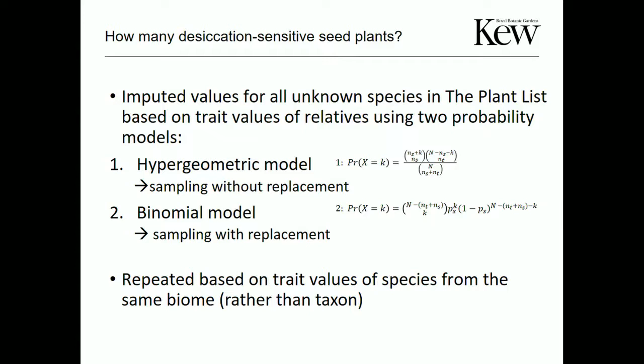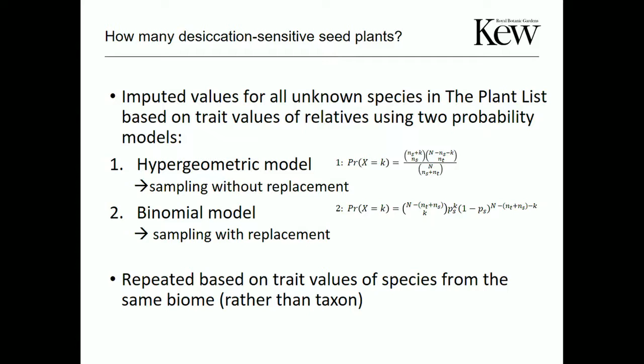We did 100 iterations of each model. The mean estimated proportion of all seed plants with this trait: three of our four models produce quite a similar result, around about 8%.